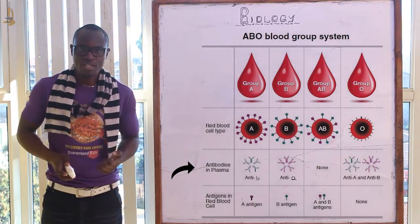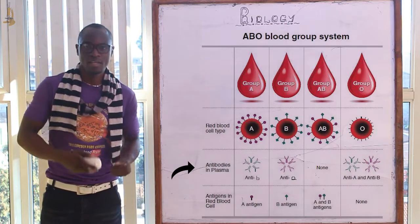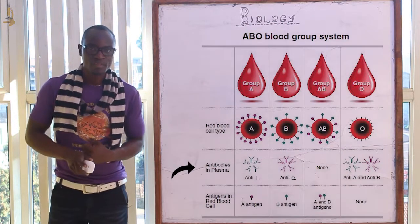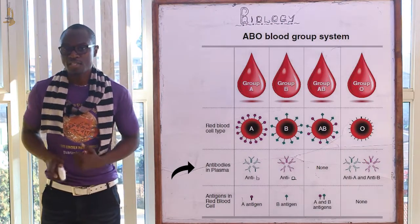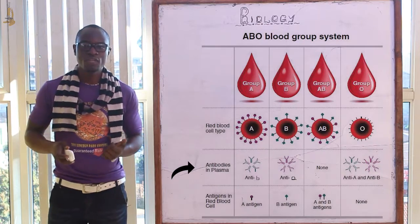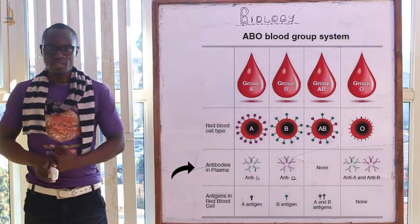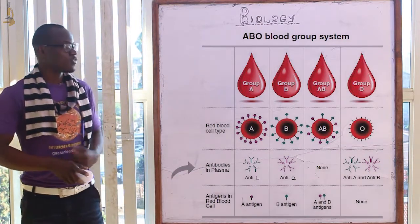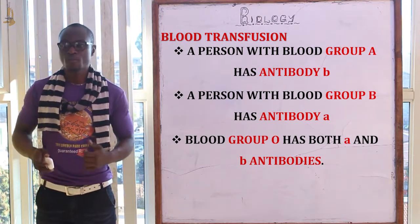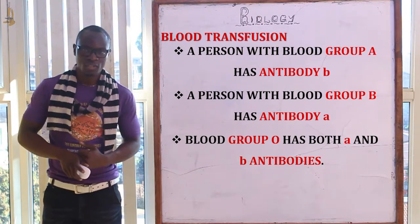The plasma also has proteins called antibodies, designated as small a and small b. The function of these antibodies is to defend the body from harmful microorganisms. Now let's look at blood transfusion.